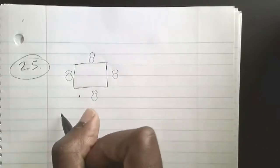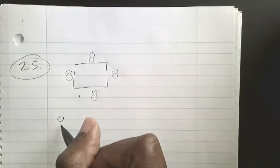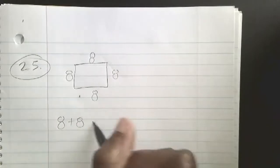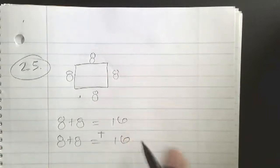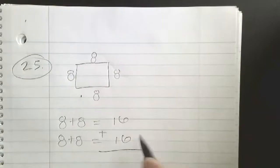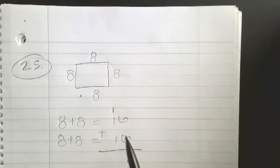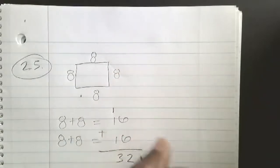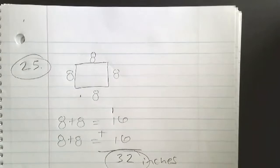To find the perimeter, we add all of the sides. Eight plus eight equals 16, and the other eight plus eight equals 16. Now we add 16 plus 16: six plus six equals 12, put down the two, carry the one; one plus one plus one equals three. So 32. Your answer should be 32 inches.